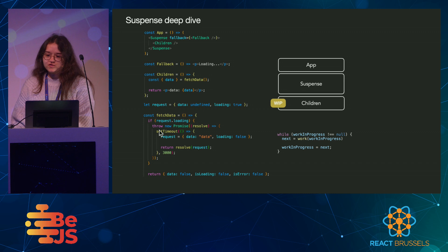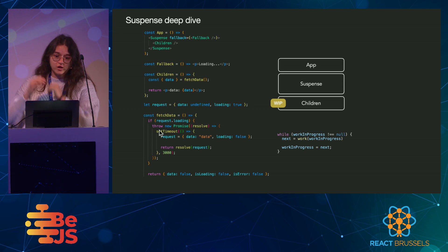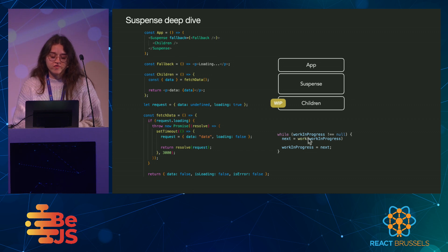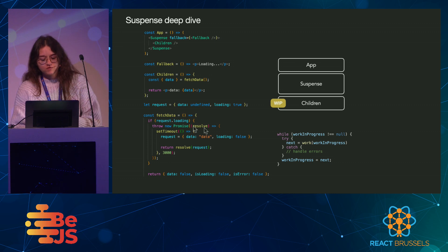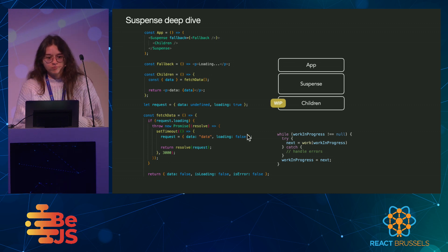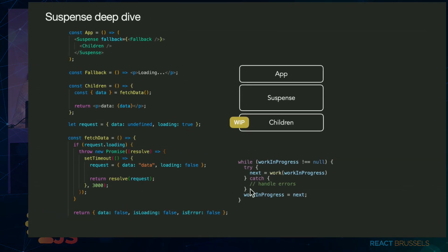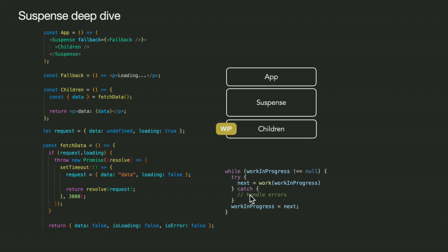You throw this promise, and just like with any other regular error, it's going to bubble up. And our work function that is currently rendering our component — this work function is actually nested within a try-catch. So when we throw this promise, it bubbles up until it reaches this catch. And here, we're inside React's code. So here, we're going to be able to handle the loader.